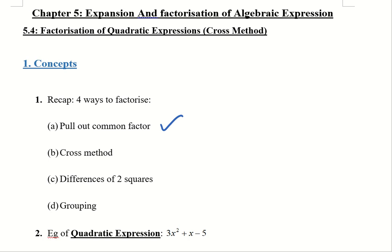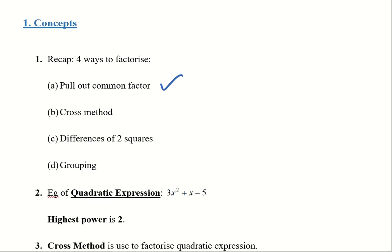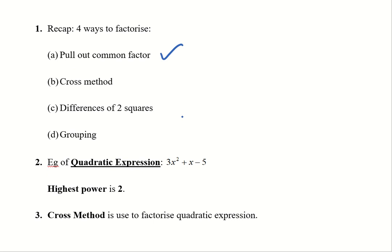Cross method is very useful in factorizing a quadratic expression. A quadratic expression is in the form of 3x squared plus x minus 5 — it has three different terms, the highest power is 2, and the format is always ax squared plus bx plus a number term. Cross method is used to factorize such expressions.